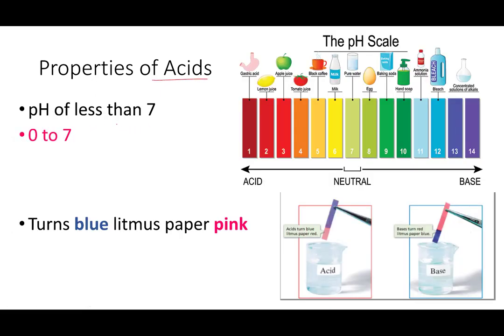Acids have a pH less than 7. Now we're going to talk about pH throughout our discussion of acids and bases. The pH scale ranges from 0 to 14; neutral is 7. So 7 is a neutral solution. Anything with a pH lower than 7 is an acid. Milk has a pH close to about 6. Black coffee is a little bit more acidic, about 5. Tomato juice, about 4. Apple juice, about 3. Amazingly enough, apple juice can be more acidic than tomato juice.